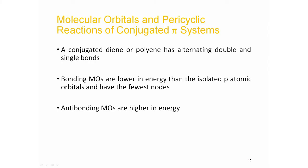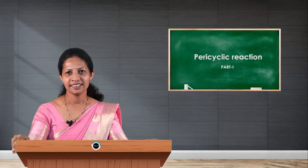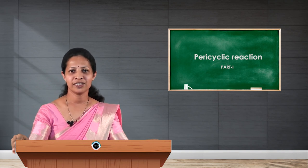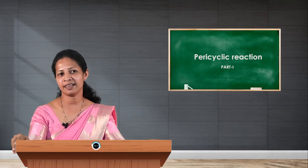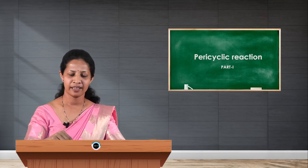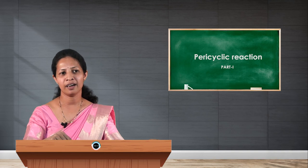To understand these theories, the molecular orbitals of conjugated systems are necessary. The conjugated pi system contains alternating double and single bonds. Molecular orbital theory follows a linear combination of atomic orbitals, involving bonding molecular orbitals and anti-bonding molecular orbitals. Bonding molecular orbitals are lower in energy than isolated pi atomic orbitals and have the fewest nodes, whereas anti-bonding molecular orbitals are higher in energy with more nodes.